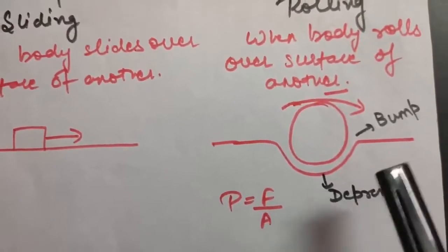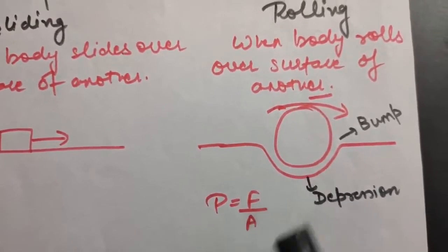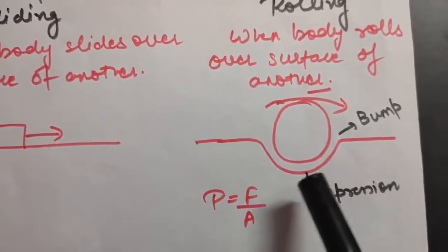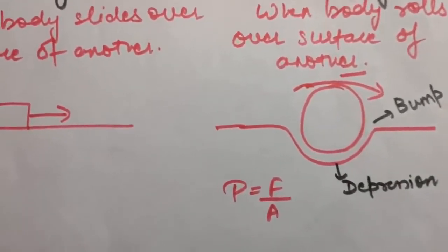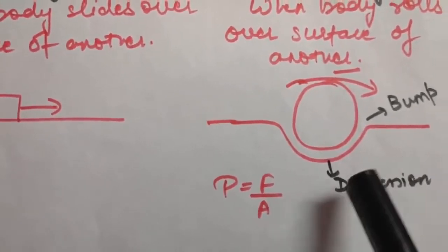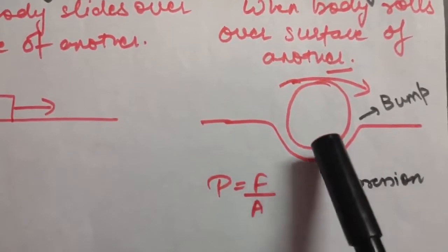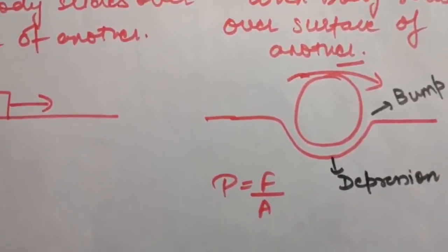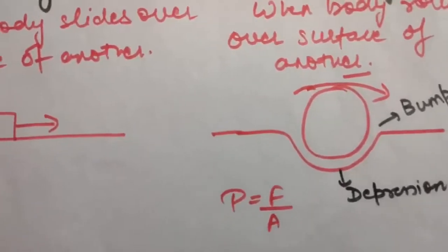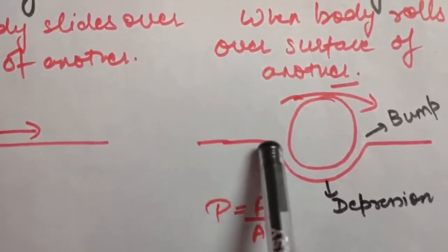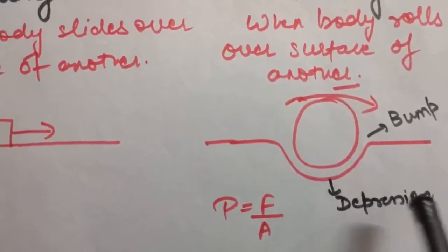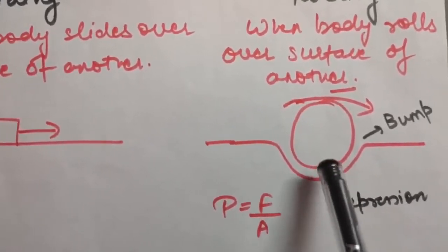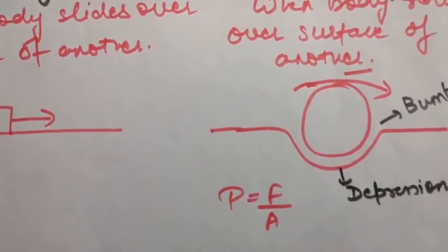When depression and bump are created, the surface of the rolling body in contact gets compressed, so a larger area is now in contact. The rolling wheel has to constantly come out of this depression and cross the bump to move forward. Because there is a force of attraction between the two surfaces, the motion is opposed by that force of attraction, and therefore rolling friction comes into play.